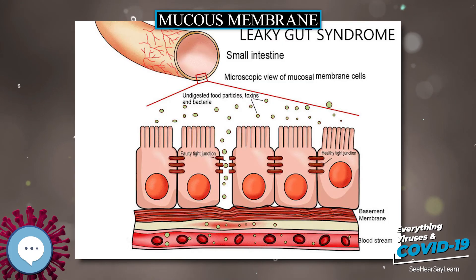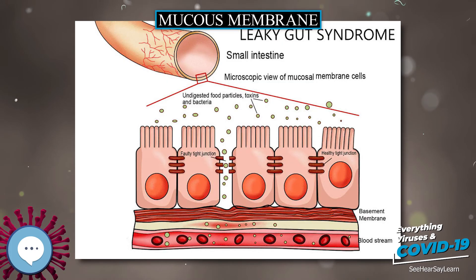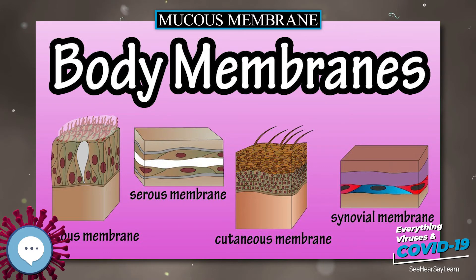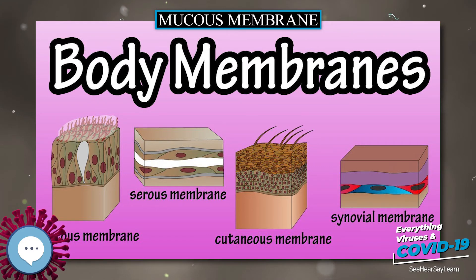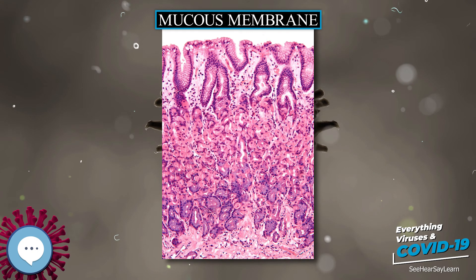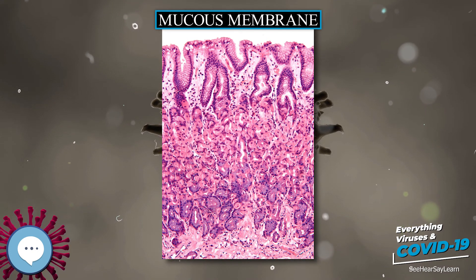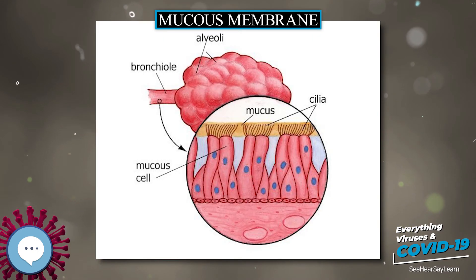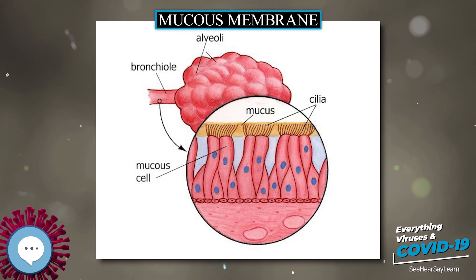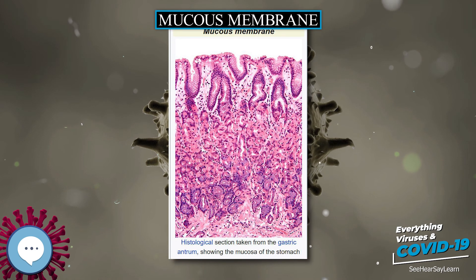Two of its functions are to keep tissue moist — for example, in the respiratory tract, including the mouth and nose — and to play a role in absorbing and transforming nutrients. Mucous membranes also protect the body from itself; for instance, mucosa in the stomach protects it from stomach acid.